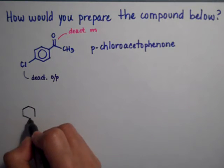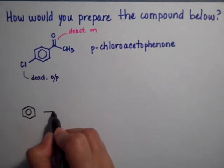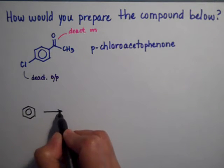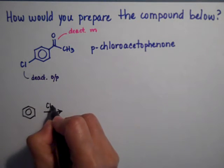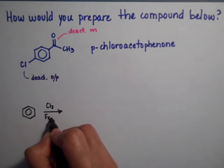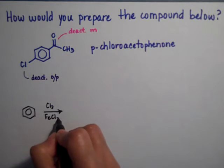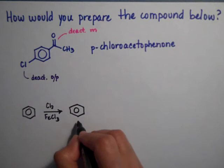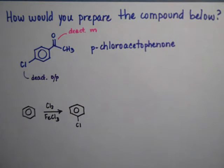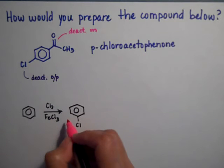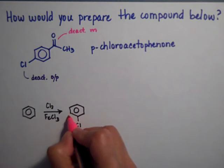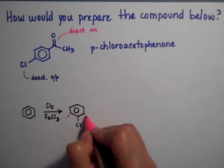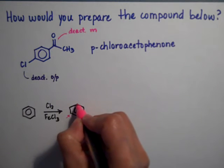So we start with benzene — it's always good to start with benzene so you practice your reactions. First I'm going to do the chlorination reaction. We're going to put the chlorine right here at the bottom; you can put it anywhere you want. The chloro is an ortho-para director, so it's pointing to the ortho and the para position at the very top.